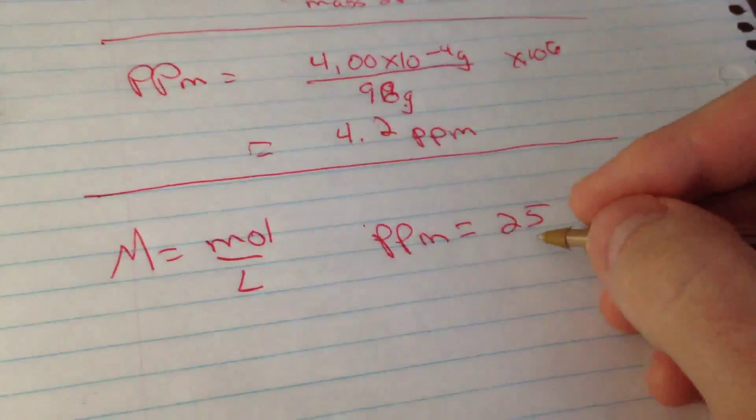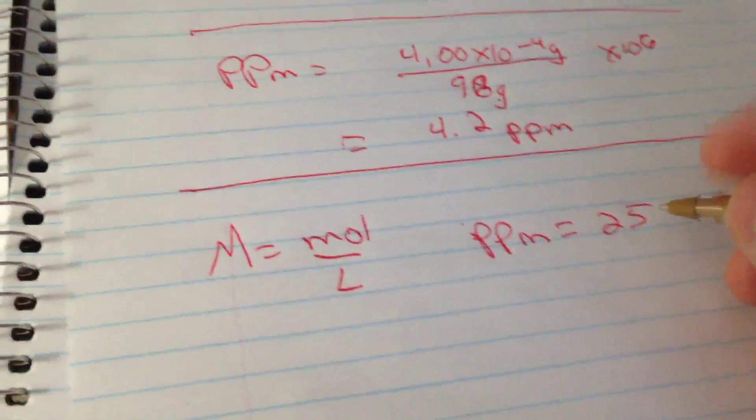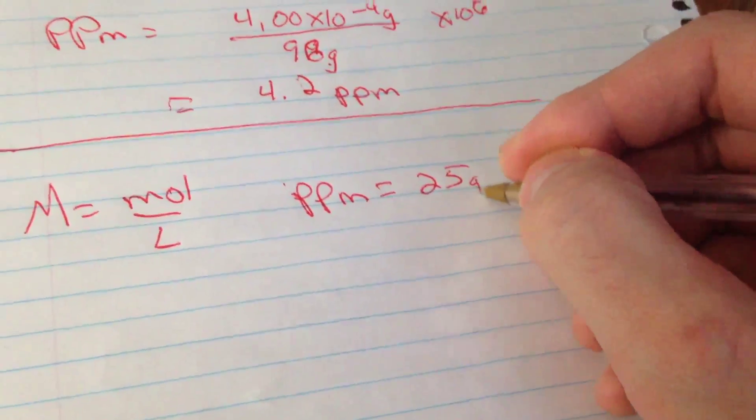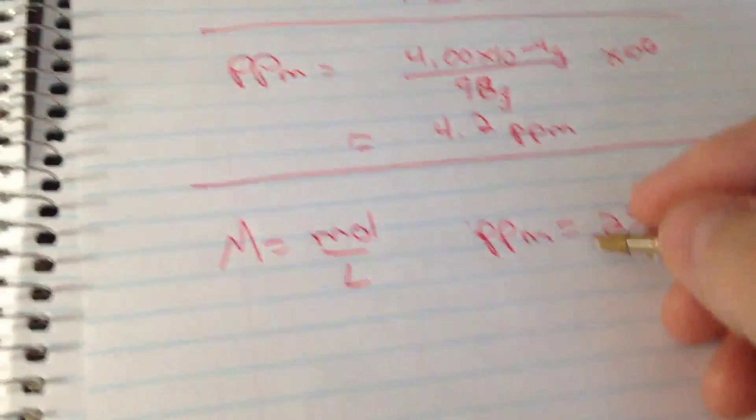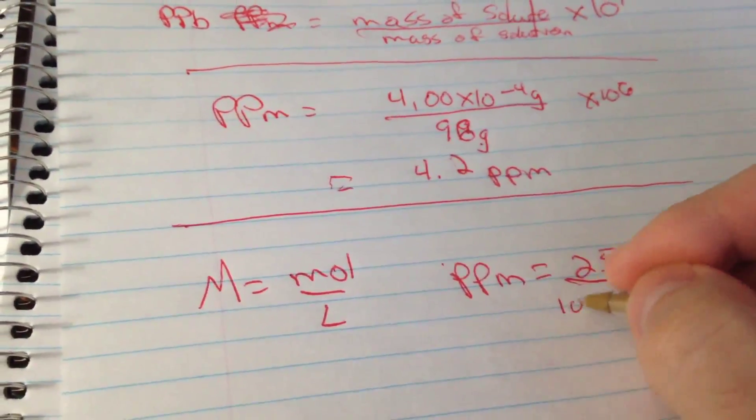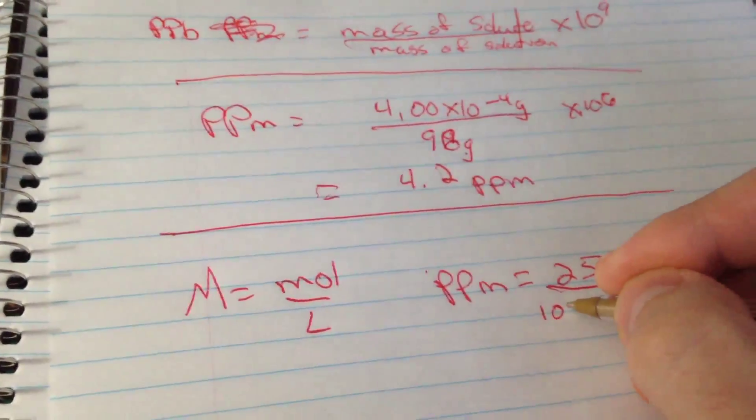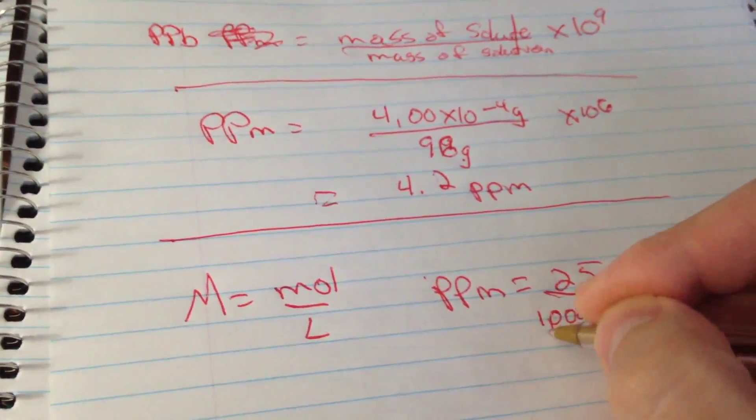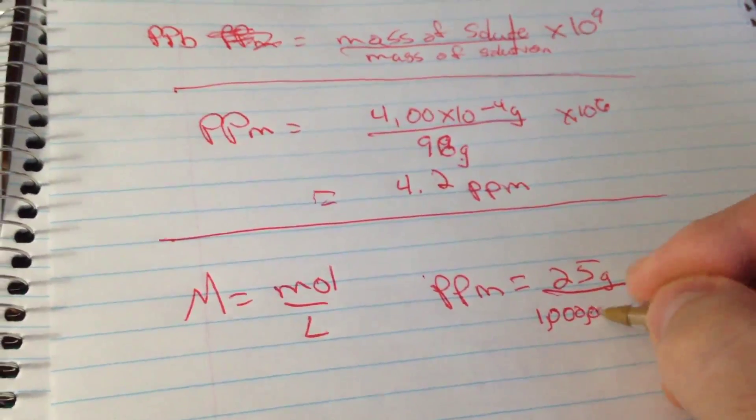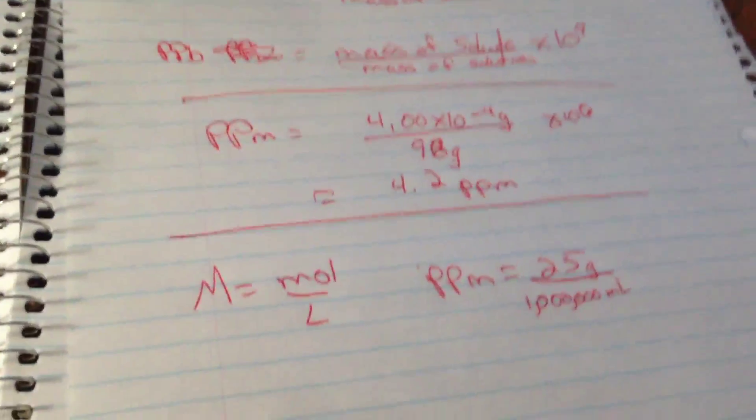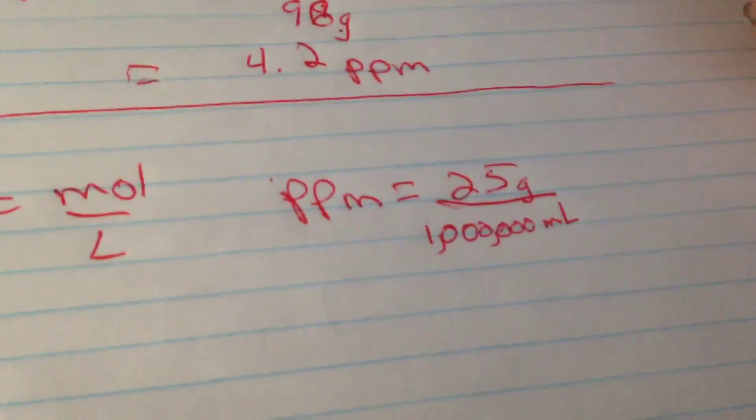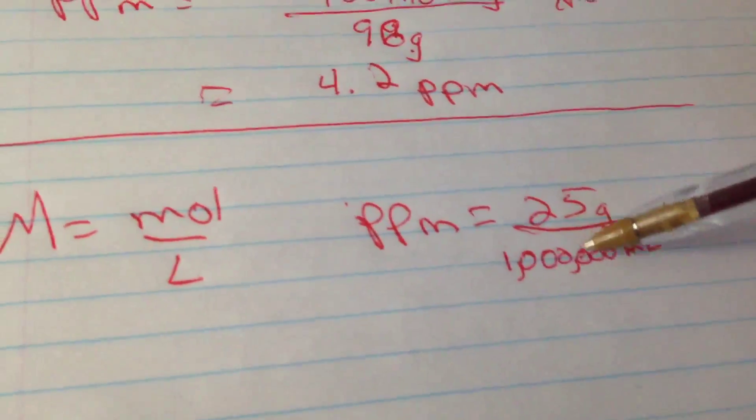which is just 25. And what that 25 parts per million is, that's actually 25 grams per 1 million milliliters. So I'm actually gonna write this all out. Okay, so we have 25 grams per 1 million milliliters.